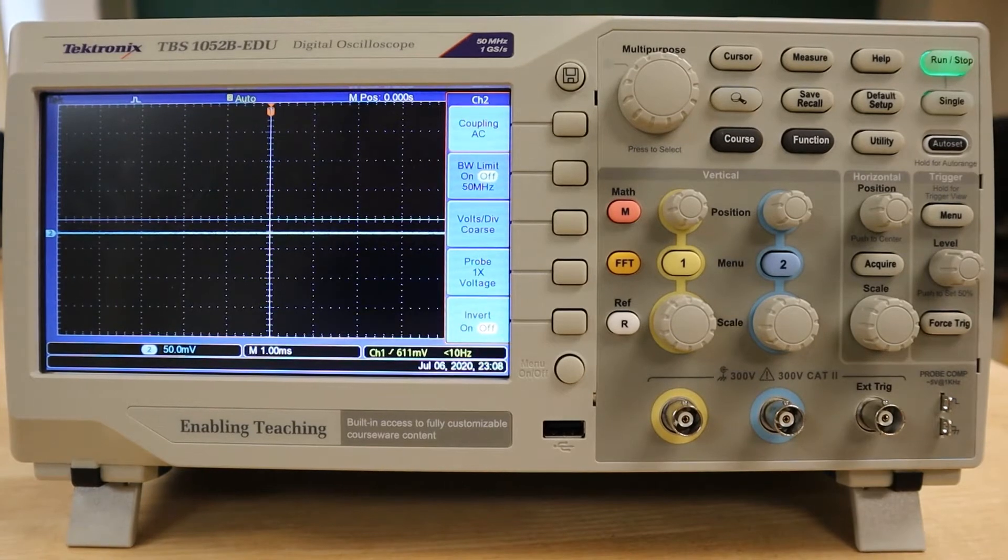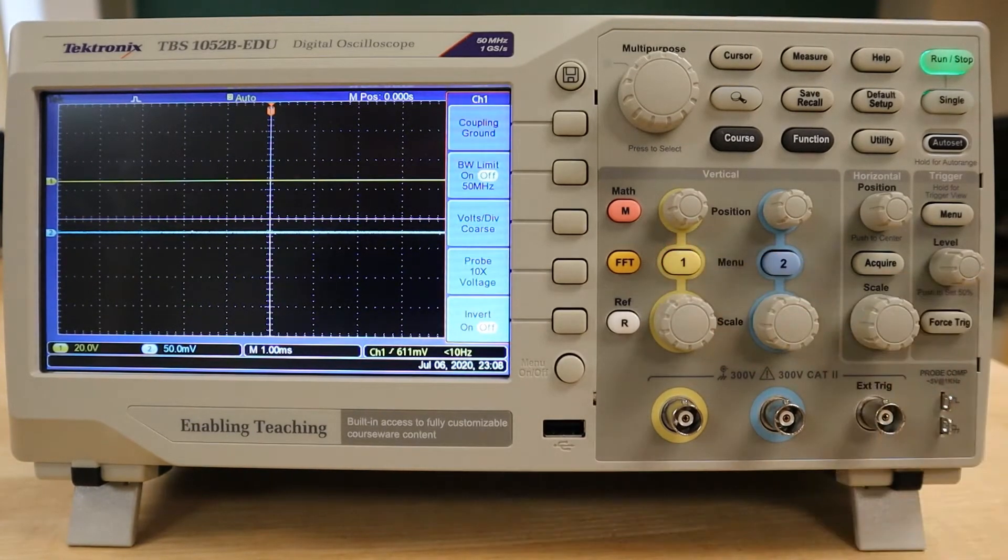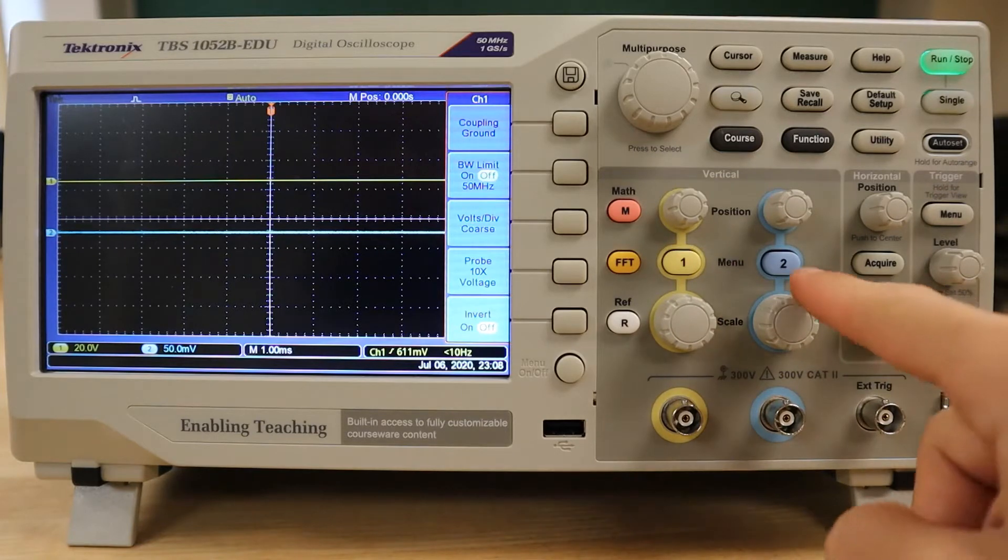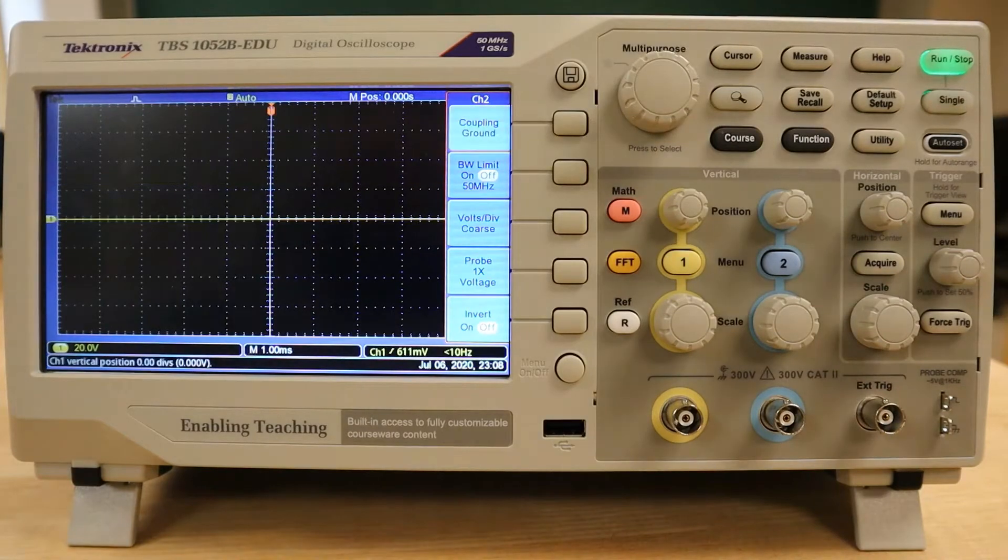To begin, we'll initiate our oscilloscope, turning on the first channel trace by selecting the pertinent menu button. If the trace for the other channel is on, we'll turn it off by using the channel 2 menu button.